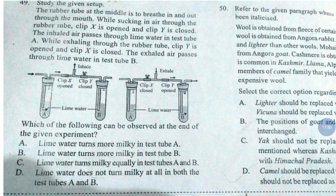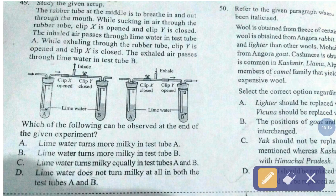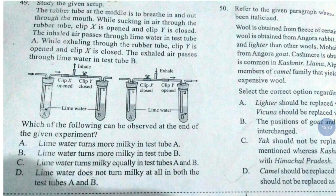Question number 49. Study the given setup. The rubber tube at the middle is to breathe in and out through the mouth. While sucking in air through the rubber tube, clip X is opened and clip Y is closed, and the inhaled air passes through lime water in test tube A. While exhaling, clip Y is opened and clip X is closed, and the exhaled air passes through lime water in test tube B. Which of the following can be observed at the end of the experiment? The correct answer is option number B — lime water turns more milky in test tube B.